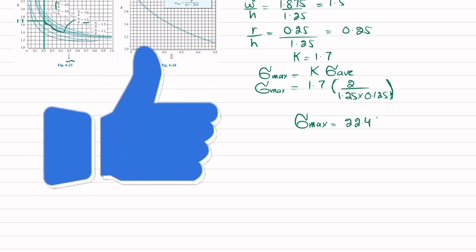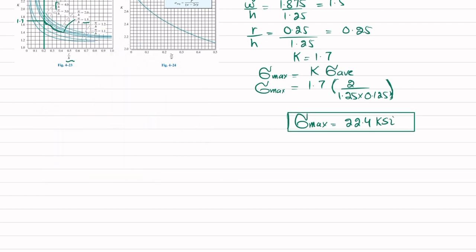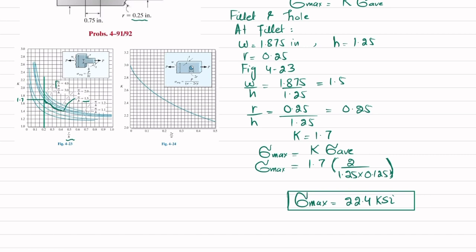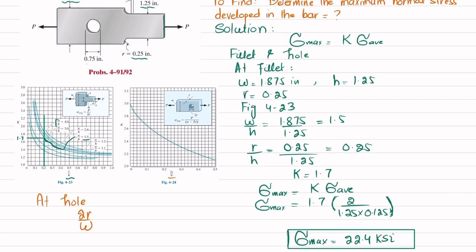When you solve this, you will get the maximum stress at the fillet which is equal to 22.4 ksi. We will now move toward the hole.